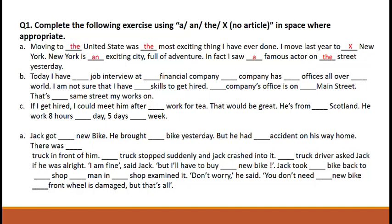Move to Part B. 'Today, I have ___ job interview at ___ financial company.' Which articles will come in these two blanks? 'A job' because we are talking about a thing in general. 'A financial company' because it is a singular noun.